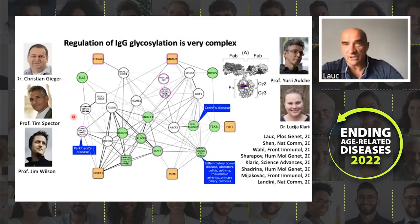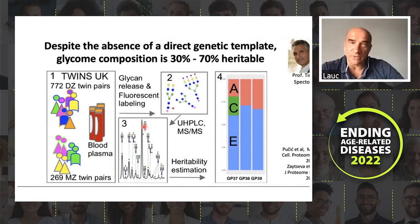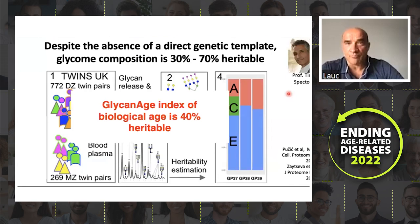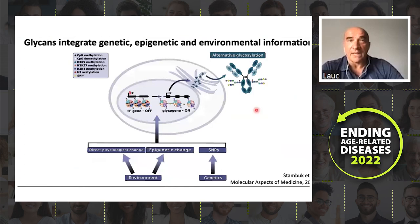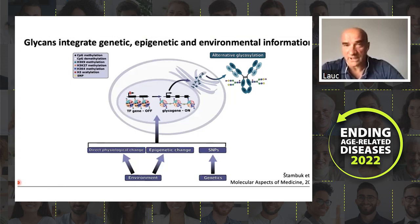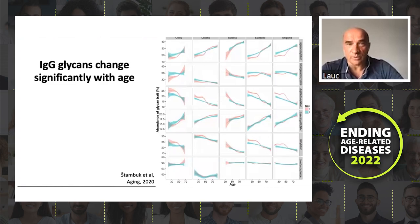Many of these genes are known risk factors for different diseases. Despite having a large number of genes involved, glycosylation is heritable, which we showed in a study of thousands of twins together with Tim Spector. The glycan age index itself is 40% heritable. The rest of the information about glycans comes either from epigenetics — epigenetic regulation of the genes involved in glycan biosynthesis — or directly from the environment through the metabolome. And one of the important elements is age: when we started looking at large cohorts, we realized that glycans change a lot with age.